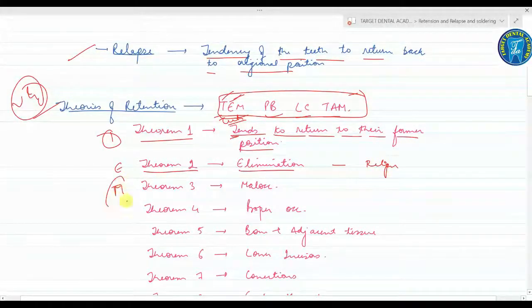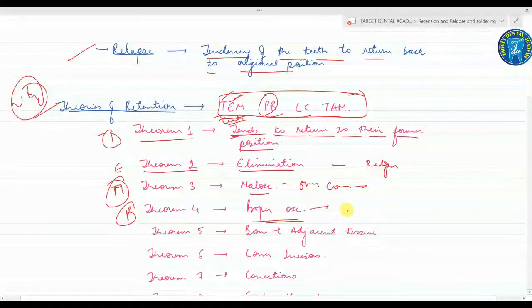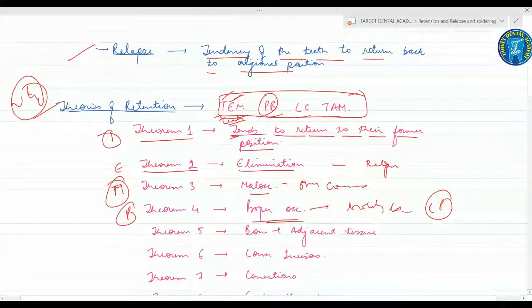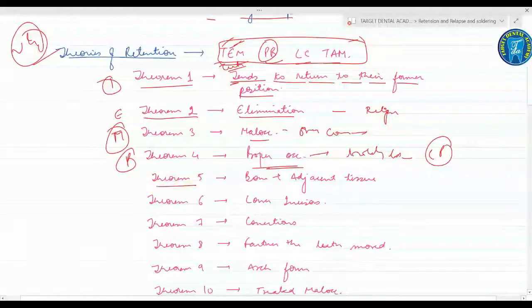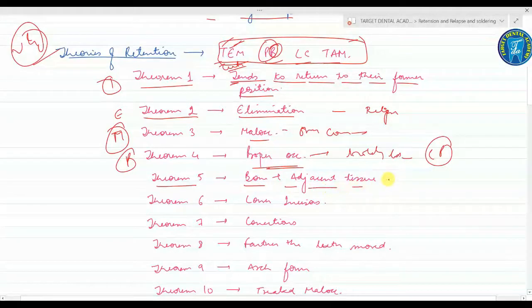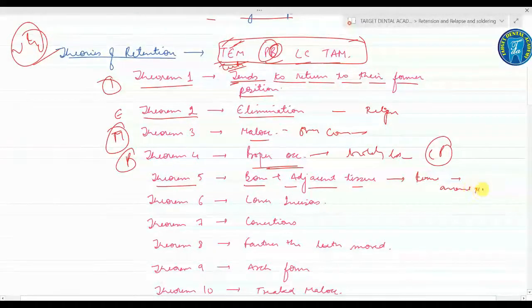M means the malocclusion should be overcorrected. Theorem four, P means proper occlusion is a potent vector in holding the teeth in their corrected position. Theorem five, B means bone and adjacent tissues must be allowed time to reorganize around the newly positioned teeth.